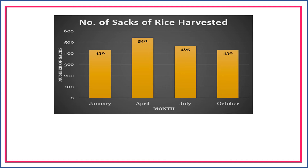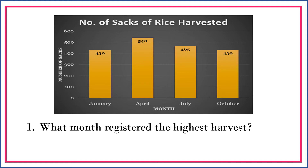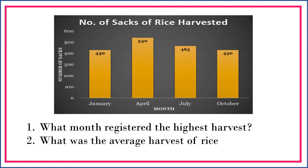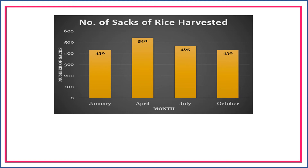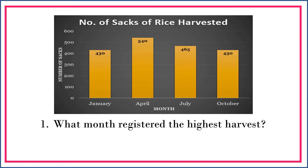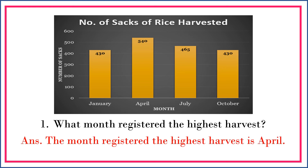Use the data on the graph to solve the problem. The questions are: what month registered the highest harvest, and what was the average harvest of rice? For the first question, the month that registered the highest harvest is April.